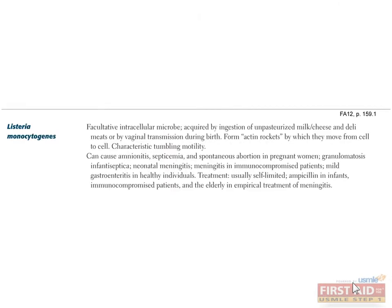Listeria monocytogenes is a facultative intracellular gram-positive rod. It is an uncommon human pathogen, primarily affecting neonates, the elderly, and the immunocompromised. It can produce flagella at room temperature, which is responsible for its characteristic tumbling motility. At 37 degrees, however, the flagella no longer develop and Listeria relies on the host cytoskeleton to create an actin tail for itself. These actin rockets allow the bacterium to move from cell to cell. Listeria is commonly found in contaminated refrigerated products such as milk, cheese, and deli meats.